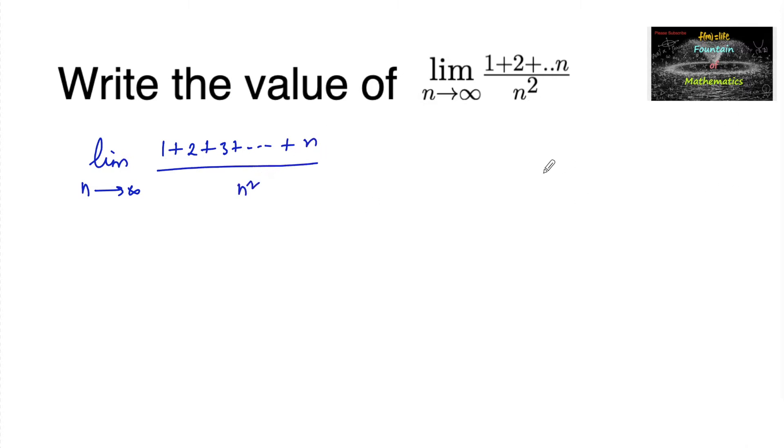Since we know that the sum of first n natural numbers, 1 plus 2 plus 3 and so on to n, is equal to n into n plus 1 by 2, we can write here limit n tends to infinity.